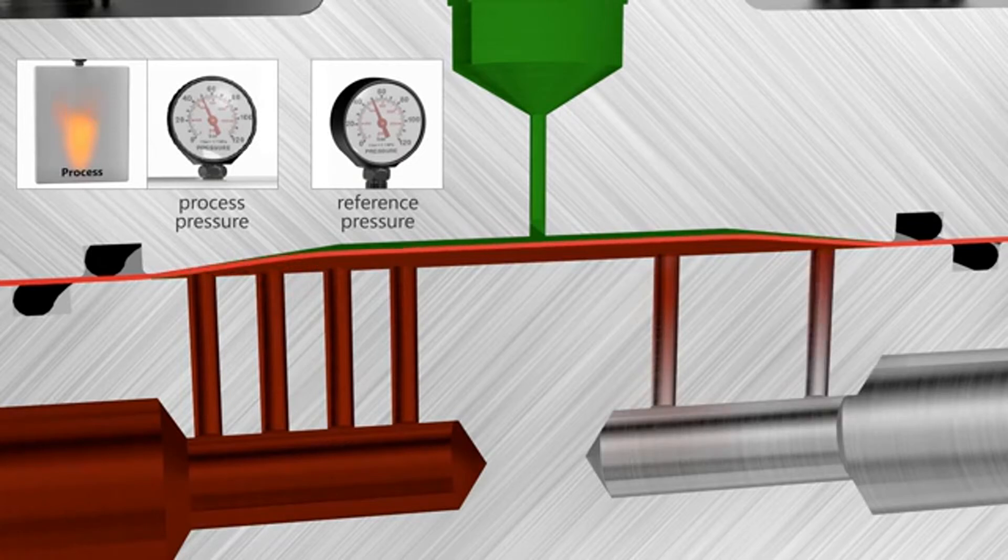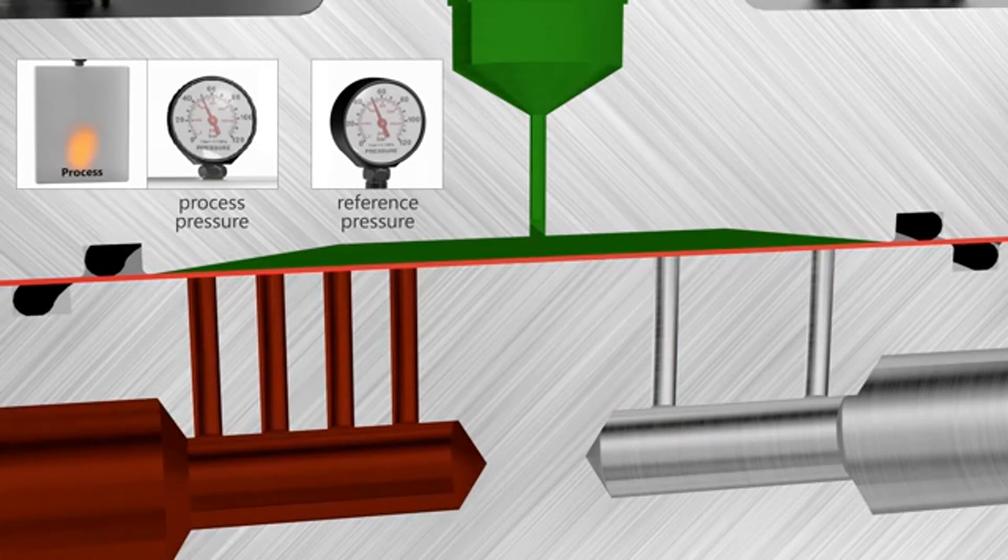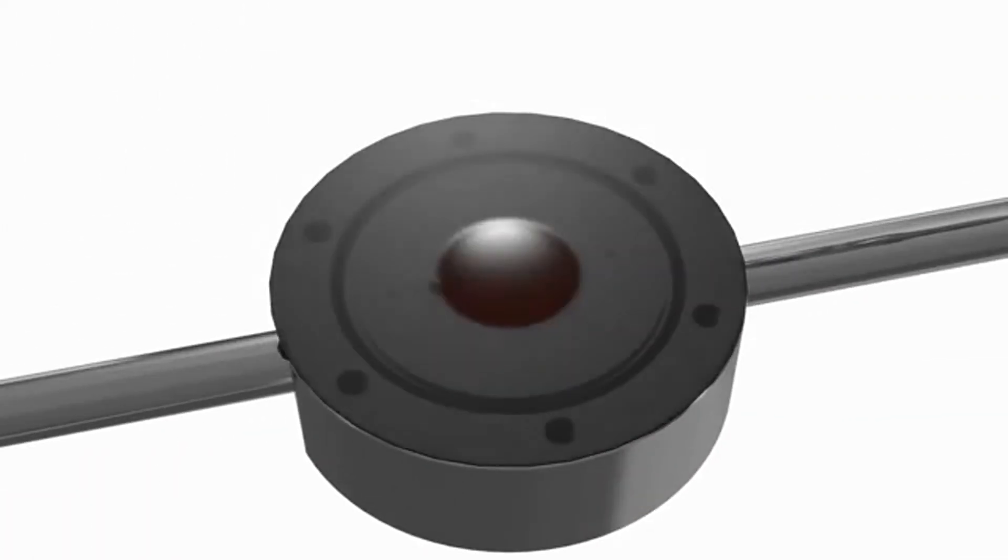When there's a rapid increase in pressure, the diaphragm will be pushed upwards, fully enabling the unit to release a large amount of flow while maintaining the constant upstream pressure.